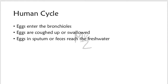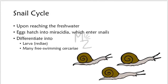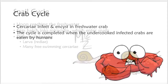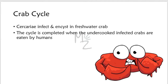Eggs in the sputum, feces, or urine that reach fresh water hatch into miracidia, which enter snails — the first intermediate hosts. There they differentiate first into redia and then into many free-swimming cercariae. This is the snail cycle. The cercariae then infect and encyst in freshwater crabs — the second intermediate hosts. This is the crab cycle. The cycle is completed when the undercooked infected crabs are eaten by humans.